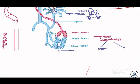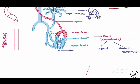Internal versus external hemorrhoids are differentiated by the pectinate line. If it is outside the pectinate line, it is external. Which type causes pain? Internal hemorrhoids are painless; external hemorrhoids are painful. So external causes pain and internal is painless.